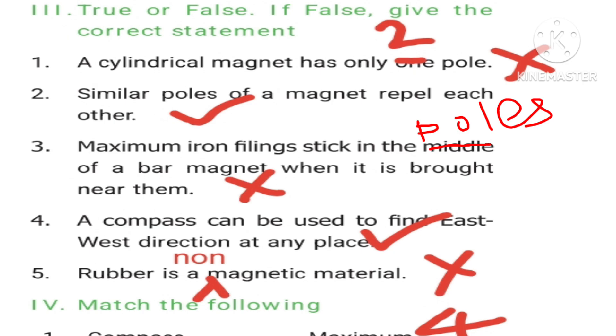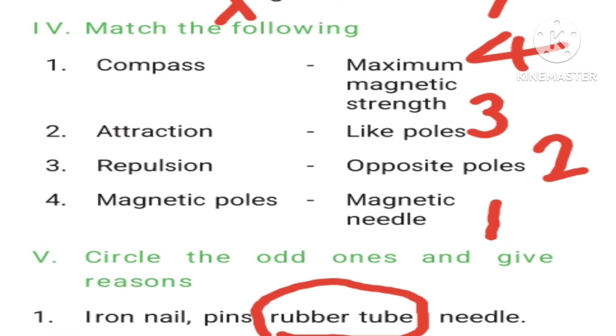Fourth question: A compass can be used to find east-west direction at any place. Answer is correct. Fifth question: Rubber is a magnetic material. The statement is wrong. Rubber is a non-magnetic material. Roman letter 4, match the following. First question: Compass - Magnetic needle. Second one: Attraction - Opposite poles. Third one: Repulsion - Like poles. Fourth one: Magnetic poles - Maximum magnetic strength. Answer is 4-3-2-1.